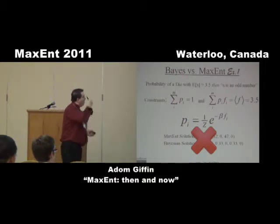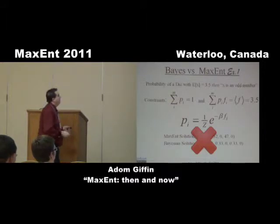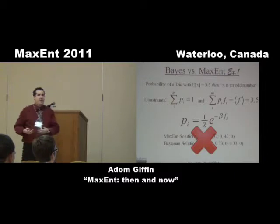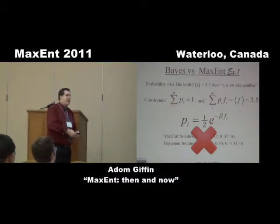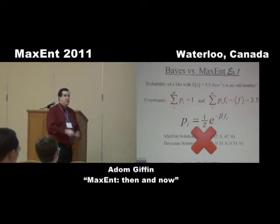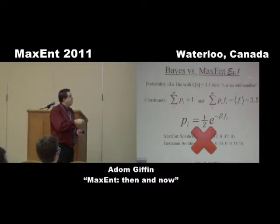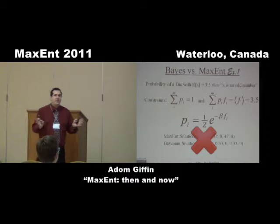The reason this is wrong is the logic of how it's used. MaxEnt doesn't do 'then.' 'Then' would imply an update — you get something, then you get something else. In MaxEnt there is no 'then.' If you get both pieces of information, you maximize entropy with both. If one no longer applies, you don't use it. This is the traditional way to use MaxEnt. For the Bayesian solution, this person assumes that just because the average indicates equal weighting, you should use a uniform prior — that doesn't make any sense.